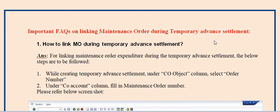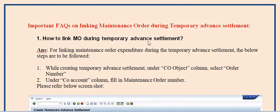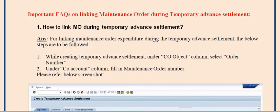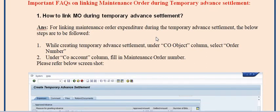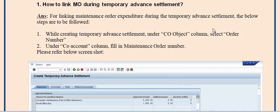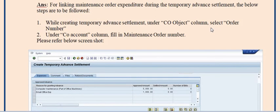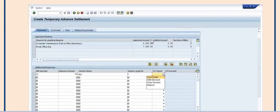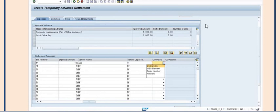Welcome to this SAP video tutorial. Today's discussion topic is how to link a maintenance order during temporary advance settlement. The steps to be followed while creating a temporary advance settlement: under the cost object column, select order number; under the CO account column, fill in the maintenance order.